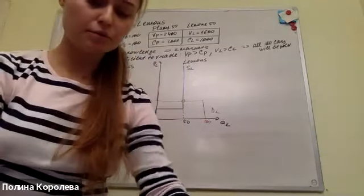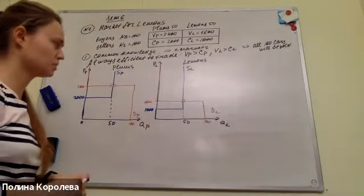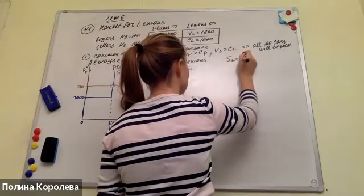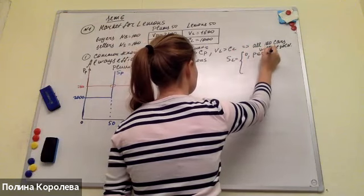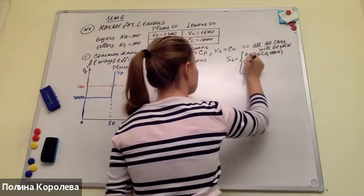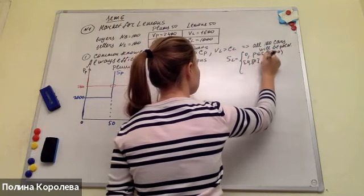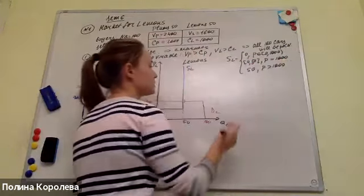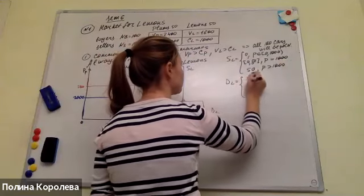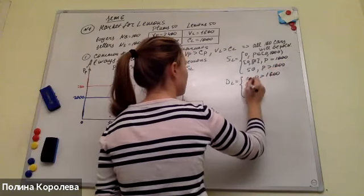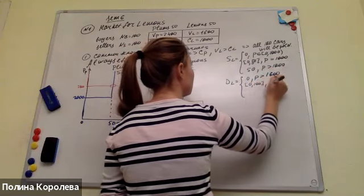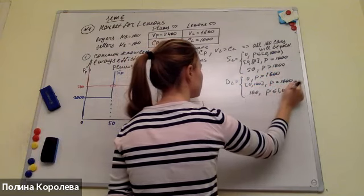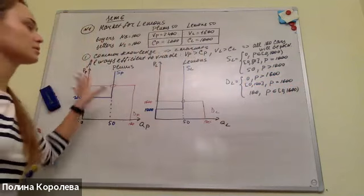Analytically, the supply for lemons: zero if price is between 0 and 1,000; between 0 and 50 if price equals 1,000; 50 if price is higher than 1,000. Demand for lemons: zero if price is higher than 1,600; between 0 and 100 if price equals 1,600; 100 if price is between 0 and 1,600. Write down the same for plums by yourself.